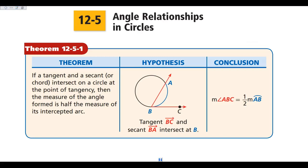Today we're looking at 12-5, which is angle relationships in circles. In the last video, we looked at 12-4, which was inscribed angles in a circle. Remember, your inscribed angle had your vertex of your angle on the circle, and it was half of its arc. We're going to expand on that a little bit today. Our first theorem: when I have a secant and a tangent line, it is still half of the arc because the vertex of the angle is still on the circle. When the vertex of your angle is on the circle, then the measure of the angle is half of the arc.